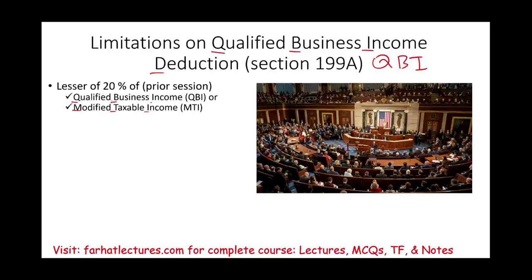Now, this is simply a deduction given to you if you are a sole proprietorship, a partnership, or an S corporation — a pass-through entity, not a C corp. However, Congress is generous to a point. Yes, they're going to give you the 20%, but they're going to limit you, and in this session we'll talk about that limitation.